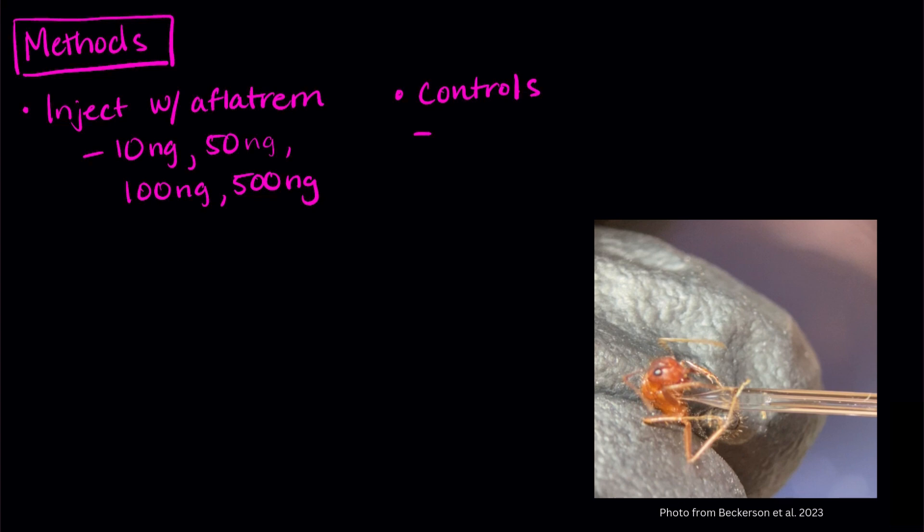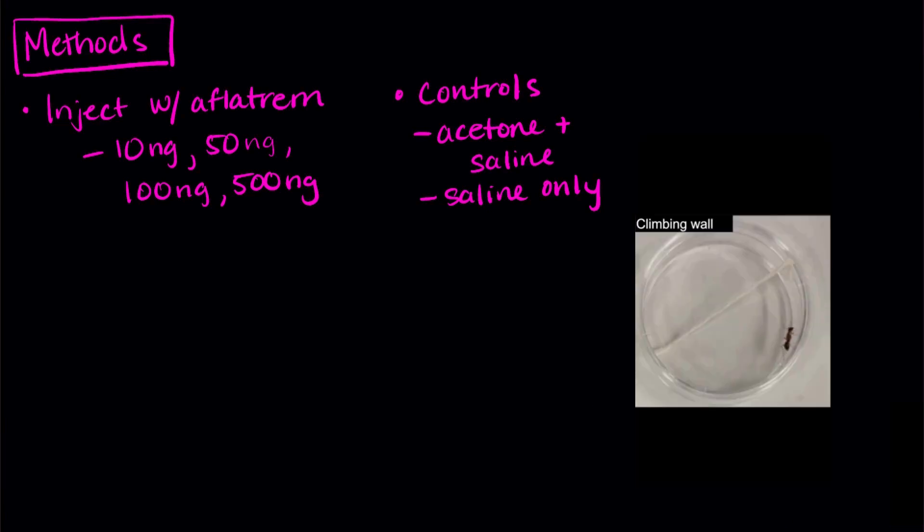To make sure that any behaviors they observed weren't from the acetone, they had one control where they just injected acetone in a saline solution into the ants. They also had another control where they injected just the saline solution. This made sure that the injection process itself wasn't causing any changes in behavior.